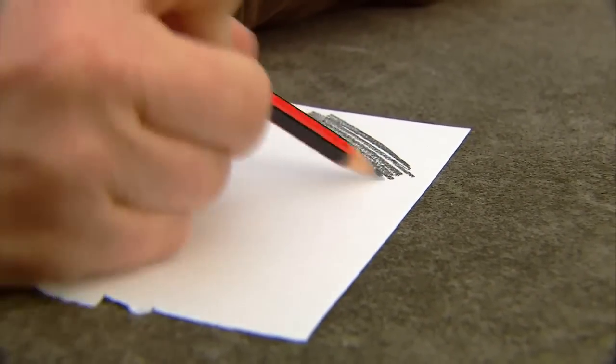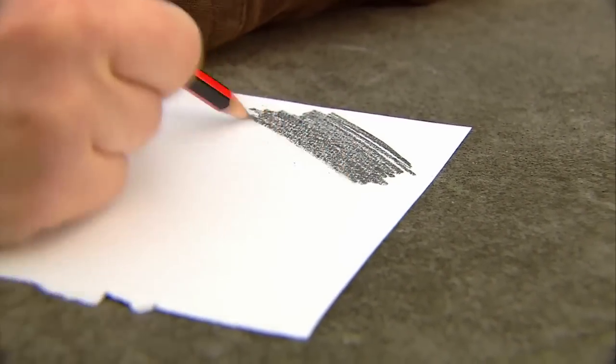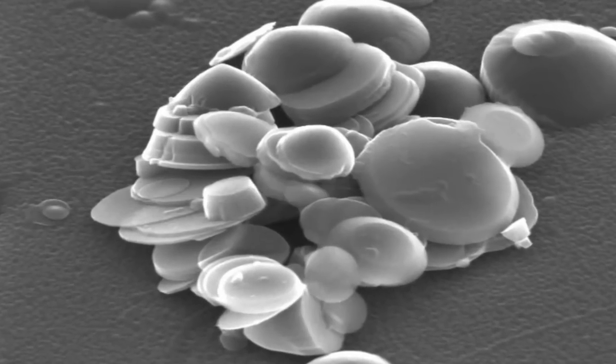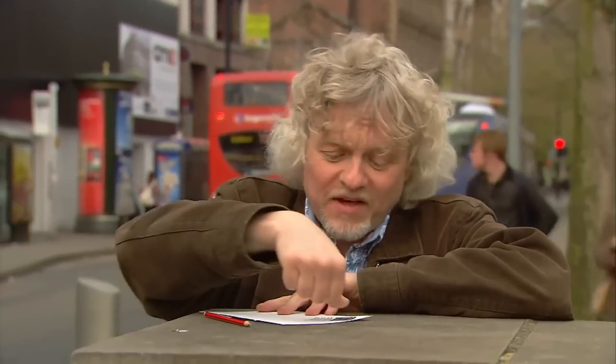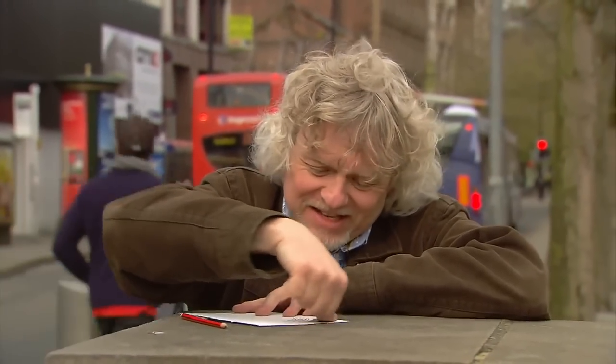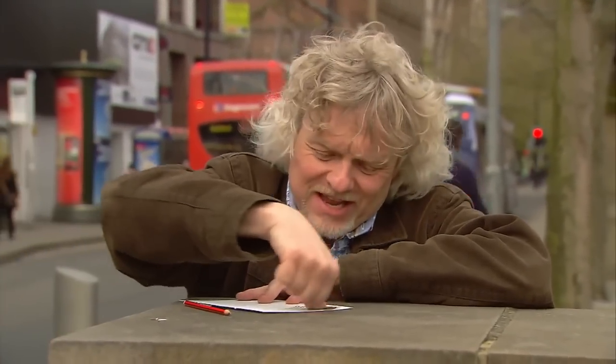Graphene is made from the stuff in your pencil - graphite. And graphite is millions of microscopic layers of tightly packed carbon. When I put my thumb into the graphite, give it a rub around, it gets covered in a layer of it.